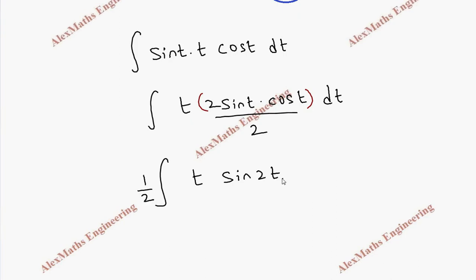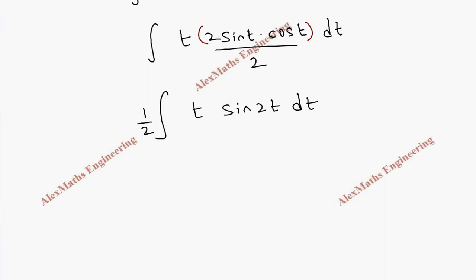Now we notice it is the product of two different functions and we have to identify the functions present. We have t which is algebraic and sine 2t which is trigonometric.